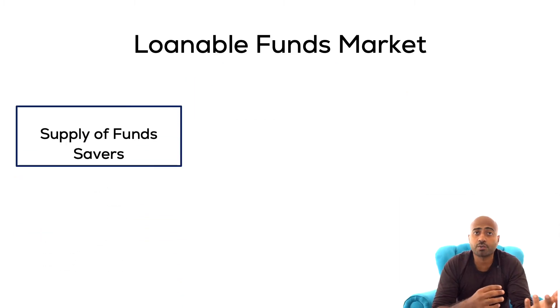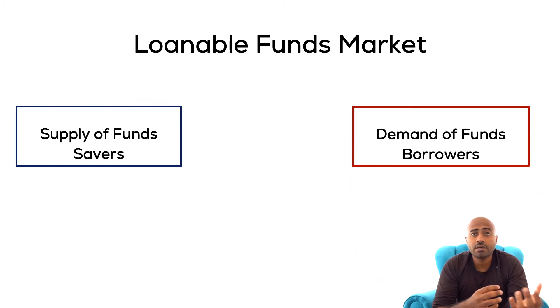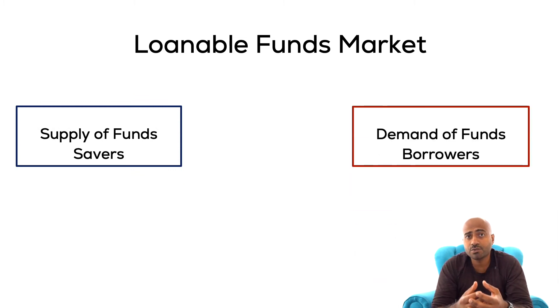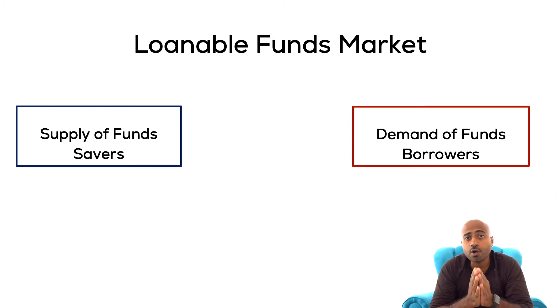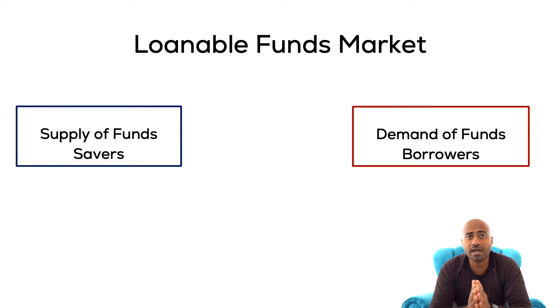These markets allow savers to provide funds to loan to borrowers. The difference in this market is we are allocating money from one group to the other, and therefore the question becomes: how do you price this product?